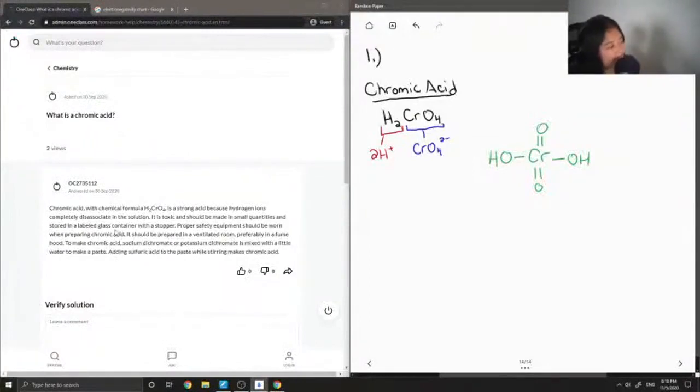So chromic acid with chemical formula H2CrO4 is a strong acid because hydrogen ions completely dissociate in the solution. It is toxic and should be made in small quantities and stored in a labeled glass container with a stopper. Proper safety equipment should be worn when preparing chromic acid. It should be prepared in a ventilated room, preferably in a fume hood.